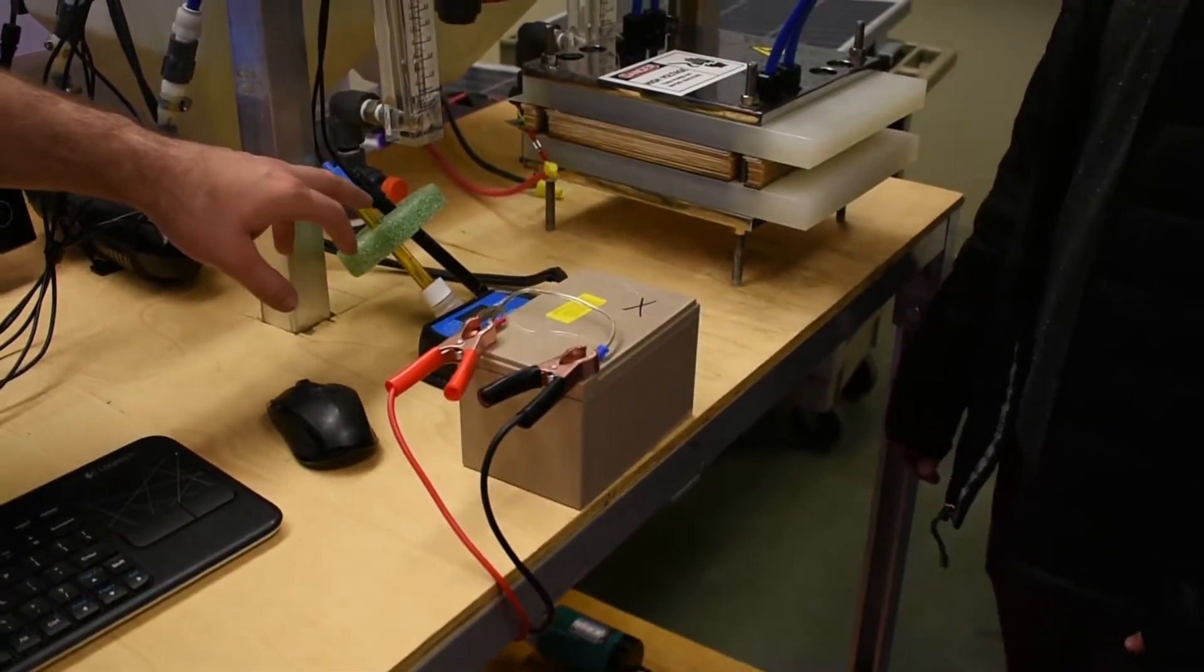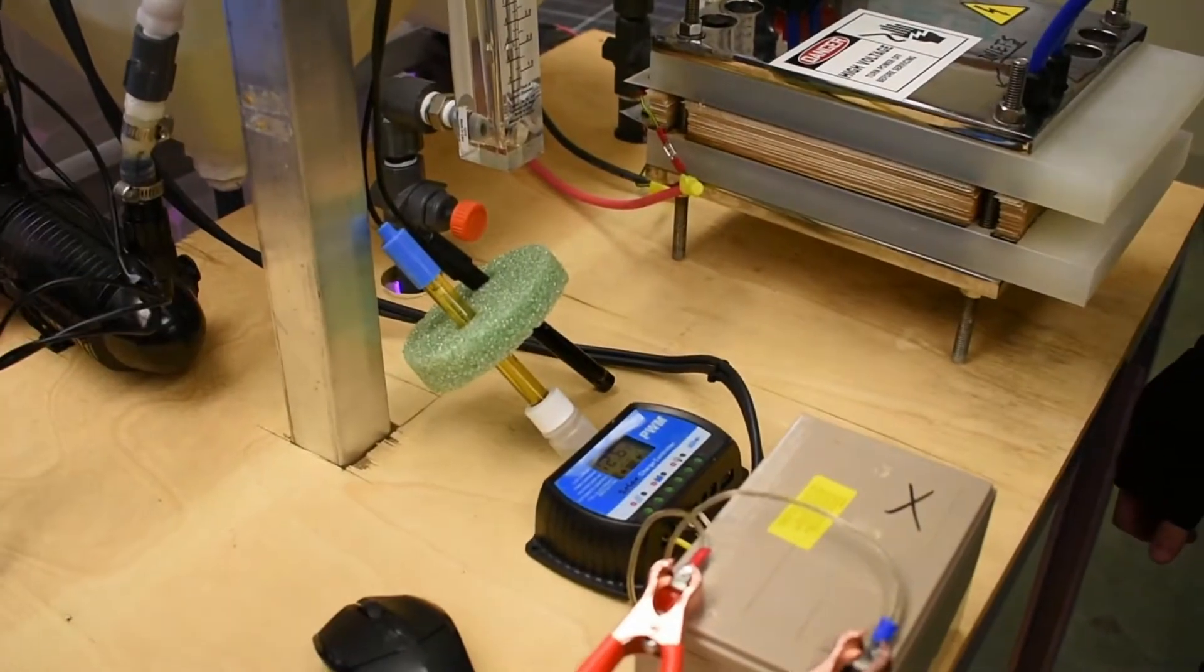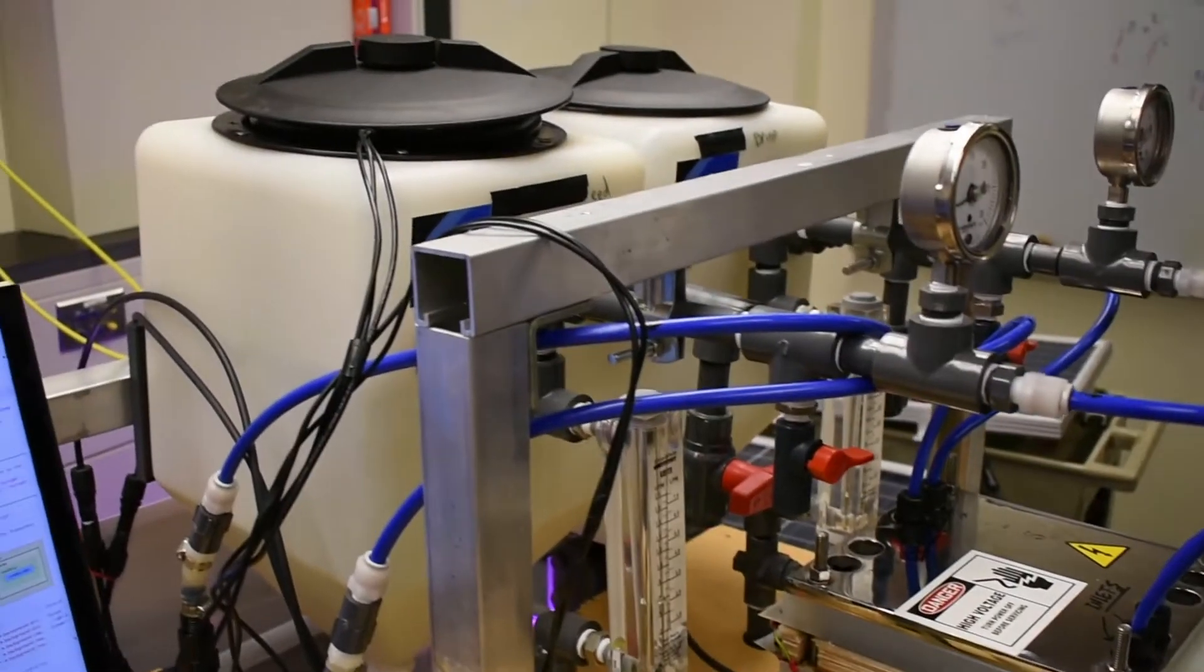So we've got a conductivity and a pH sensor on a float. It sticks in the tank and is constantly measuring every 10 seconds, conductivity and pH levels.